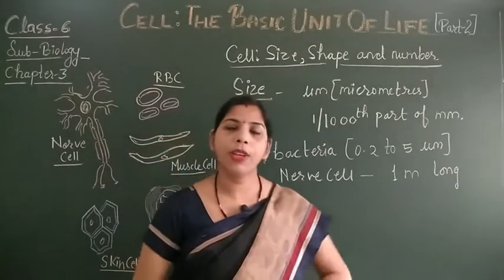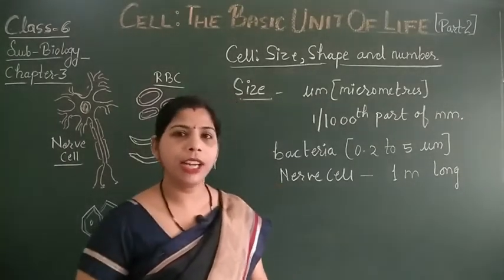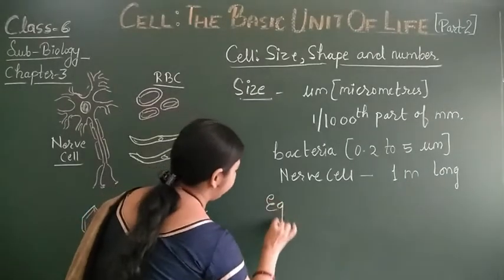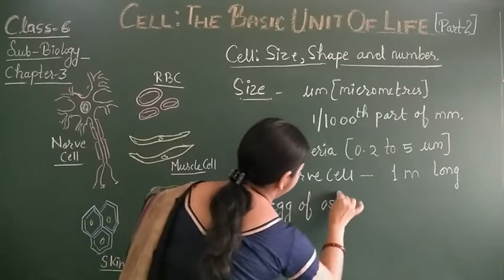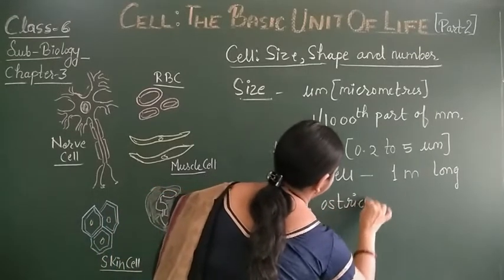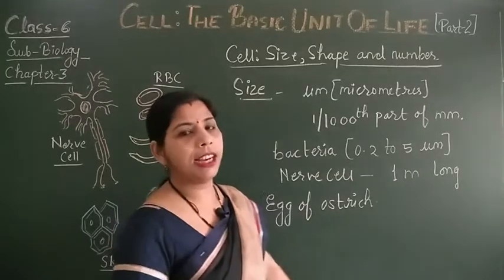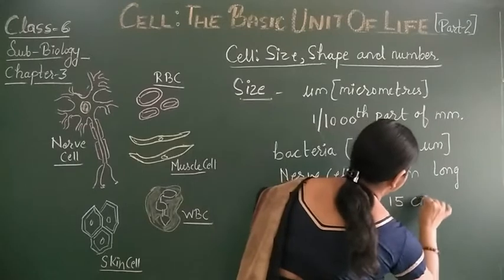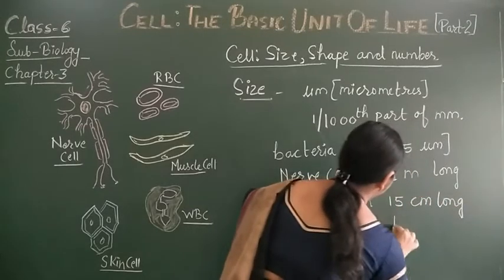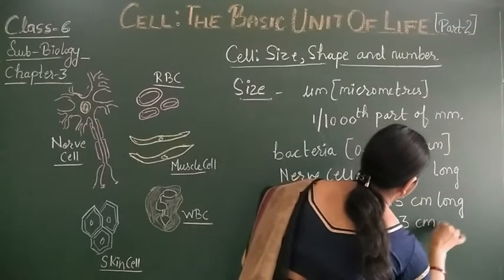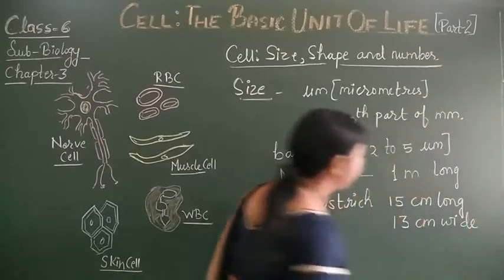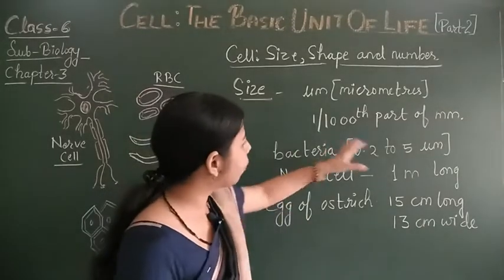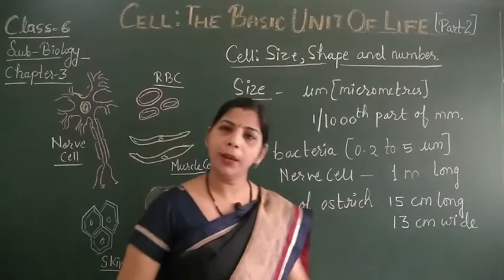Some cells are also there which are very large and we can observe them with our open eyes — just like the egg of an ostrich. The ostrich egg is 15 centimeters long and 13 centimeters wide.